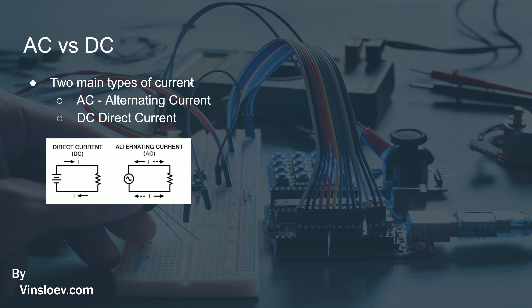So there are two main types of current. We have AC, which stands for alternating current, and then we have DC, which stands for direct current. As the names suggest, direct current — as illustrated here — has a direct line throughout the circuit, meaning that the current is traveling in the same direction from one end to the other and is not switching direction at all.